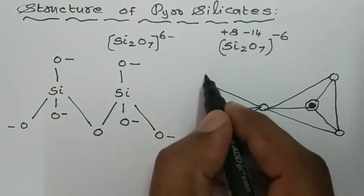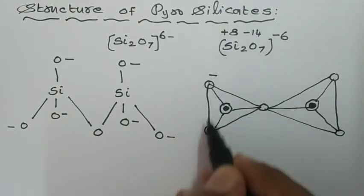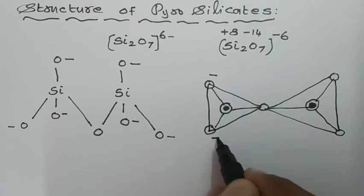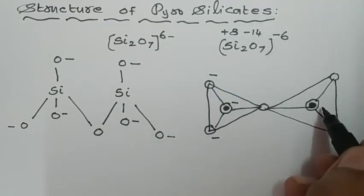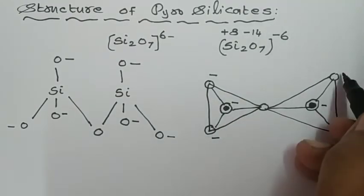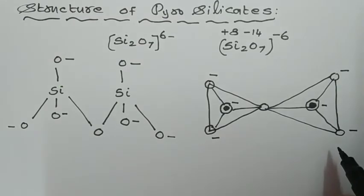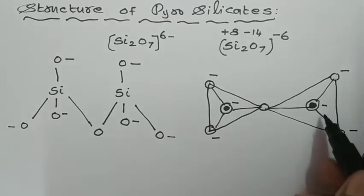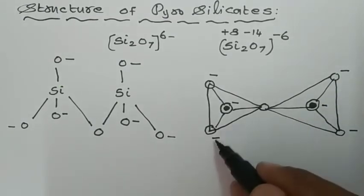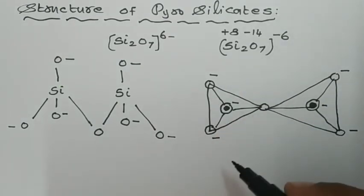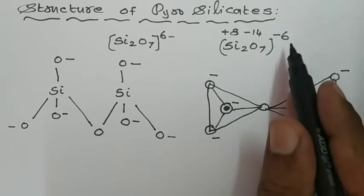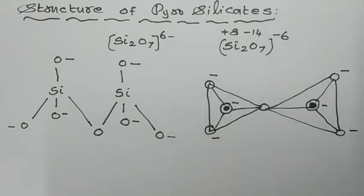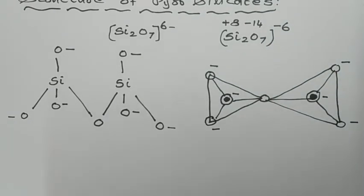Here, this oxygen is negatively charged, this oxygen is negatively charged, this oxygen minus and minus, minus, minus, minus. How many minus do you have? 1, 2, 3, 4, 5, 6 — six minus. This gives Si₂O₇⁶⁻.